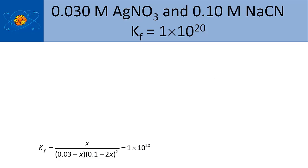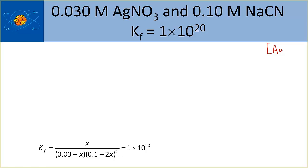I'll be using the equation to discuss the limitations of trying to calculate without using a double ICE table. In this problem, we have 0.03 molar silver nitrate and 0.1 molar sodium cyanide. I looked up KF — KF is 1×10²⁰ for the formation of the complex ion, and with that KF value I find the formula for the complex ion. The complex ion is silver cyanide, formed from silver and cyanide ions. Just ignore the nitrate and the sodium — those are the spectator ions.